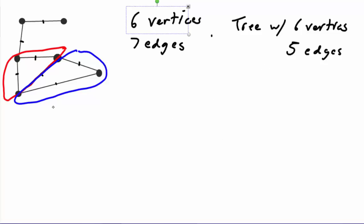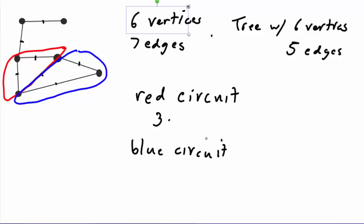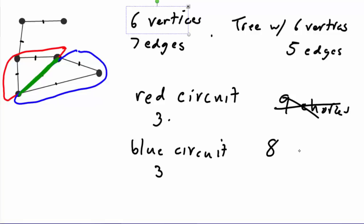The choice of edge from the red circuit and the choice from the blue circuit are linked because of that shared edge. Looking at the red circuit alone, there are three edges — three choices. The blue circuit also has three edges. But if I choose the shared middle edge from the red circuit, it's no longer available for the blue circuit. So I've lost exactly one possibility. Instead of nine choices, we only have eight spanning trees.